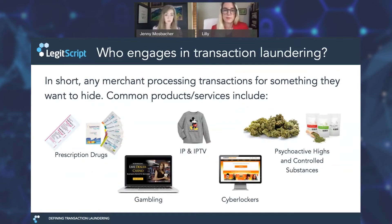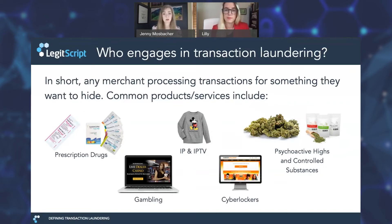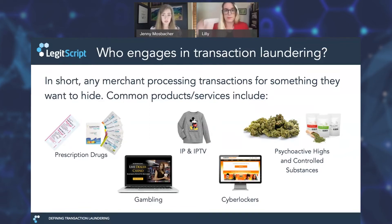Transaction laundering is conducted by any merchant who is processing transactions for something that they want to hide. These transactions can range in severity — not all the products are going to be overtly illegal, but may fall into categories deemed risky by payment processors, and therefore sale may be restricted by a processor's terms and conditions, or require expensive registration or regulation. An example of a high-risk area would be gambling, which is certainly legal in many cases, but is also subject to many complex jurisdictional regulations. Illicit merchants can range from being sole proprietors acting alone to massive organized transnational criminal networks.